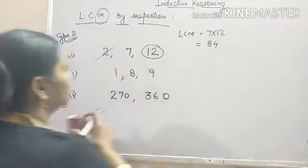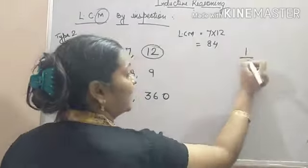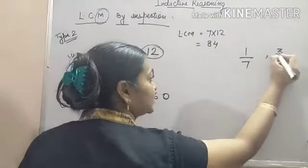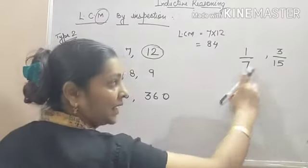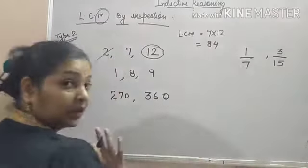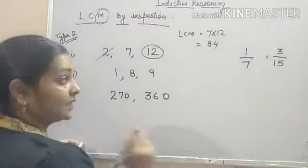So, let us solve one problem regarding it. 1 by 7 and suppose it is 3 by 15. Now, you can see that 15 is not a prime but 7 and 15 are co-prime to each other.